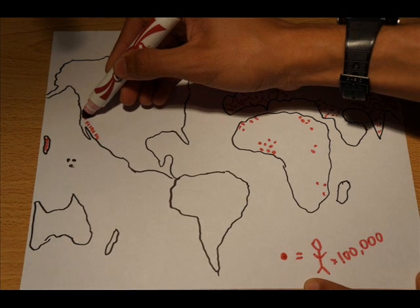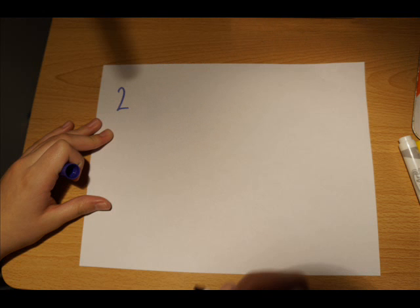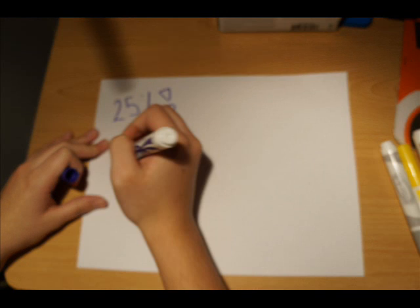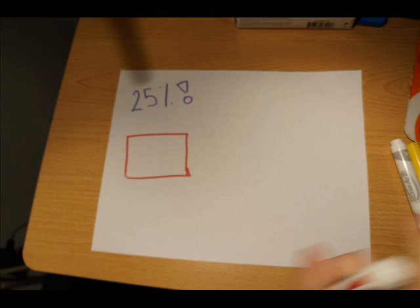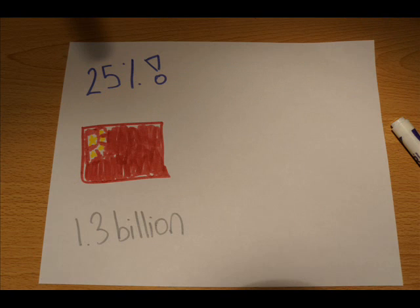There are four major areas where people are concentrated: East Asia, South Asia, Europe, and North America. East Asia has almost 25% of the world's population, most concentrated in Korea, Japan, and China. There are over 1.3 billion people in China alone.